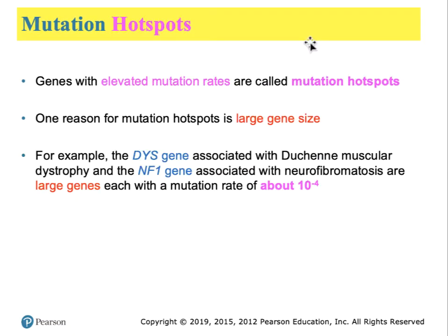Regions of the DNA with elevated levels of mutation do exist, and they are known as mutation hotspots. One reason, particularly when it comes to genes themselves, is that large genes have more region to be affected — more DNA — therefore they will be natural hotspots. Two of the largest genes that humans possess are the gene for Duchenne muscular dystrophy and the gene for neurofibromatosis. Due to their large size, they have an overall mutation rate of about one in 10,000.